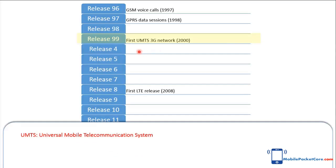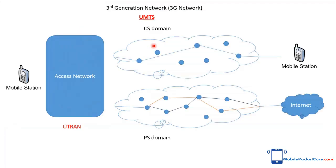In order to afford higher data rates and better utilization of network resources, 3GPP introduced Release 99 of the standards in year 2000. In this release, the third generation, 3G, network existed — UMTS, Universal Mobile Telecommunication System — which is the umbrella term for third generation technologies. UMTS has both a CS domain for voice calls and a PS domain for data sessions. The core network of UMTS is inherited from the GSM GPRS network.